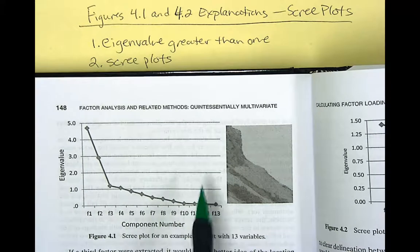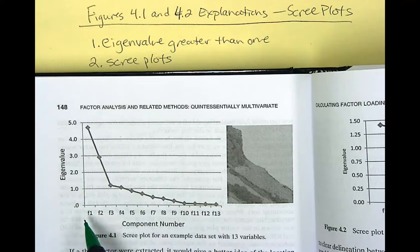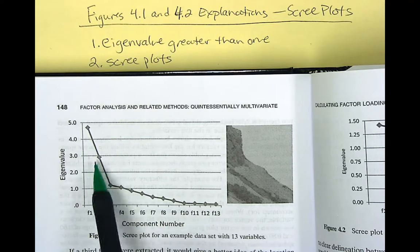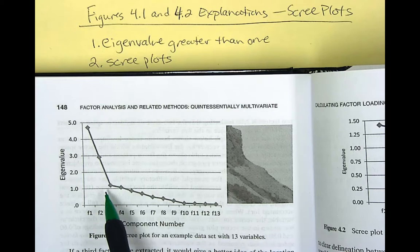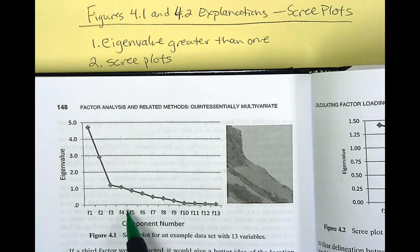We can see in this scree plot that the first factor is nearly five, it's about 4.7. The second is almost three. And the third is a little above one. And the fourth is slightly over one too. But when we get to the fifth factor, we can see that it's below one.